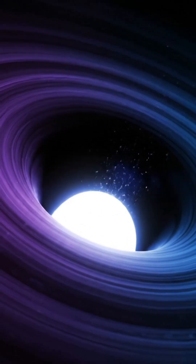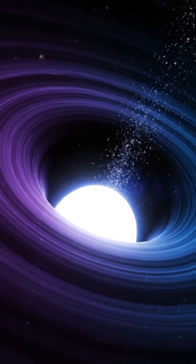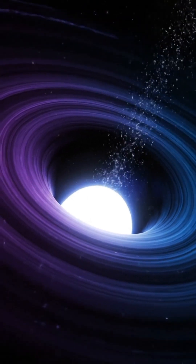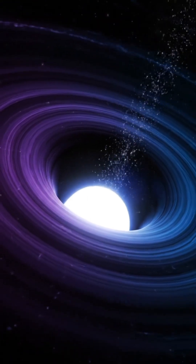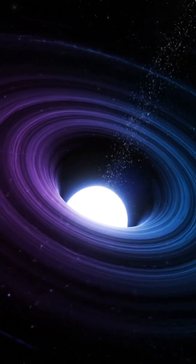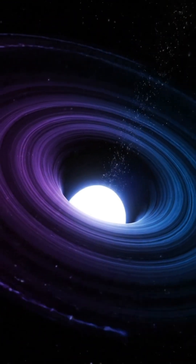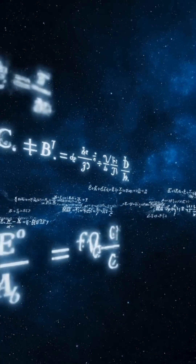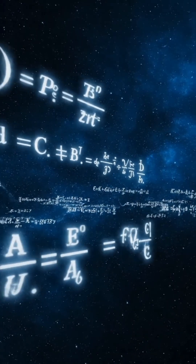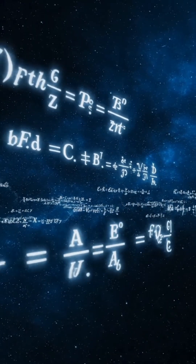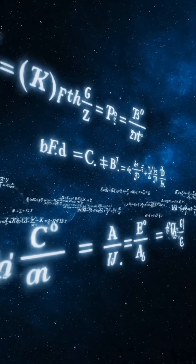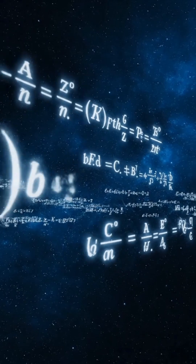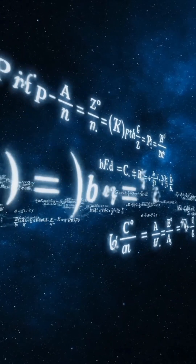At the heart of a black hole lies a singularity, where density becomes infinite and our laws of physics break down. Einstein's theory of general relativity explains how massive objects like black holes warp the geometric fabric of space-time.